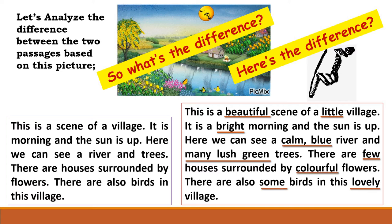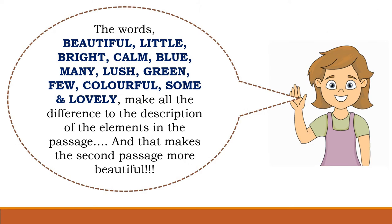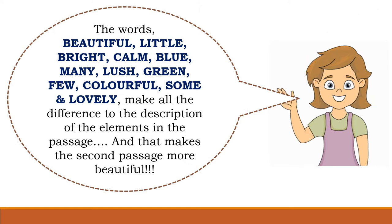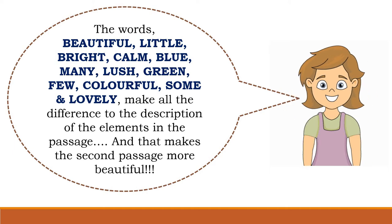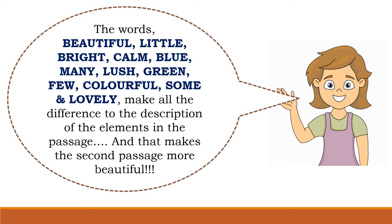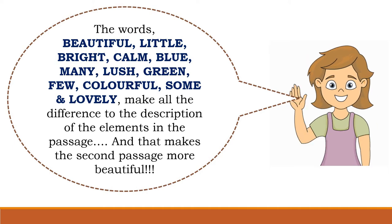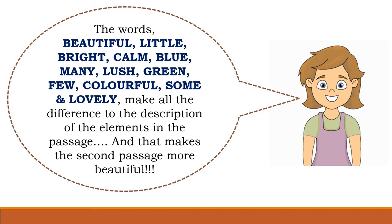This is the difference between the two passages — there are some words added in the second passage. The words beautiful, little, bright, calm, blue, many, lush, green, few, colorful, some, lovely — these all make the difference to the description of the elements in the passage and that makes the second passage more beautiful.